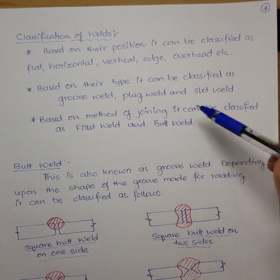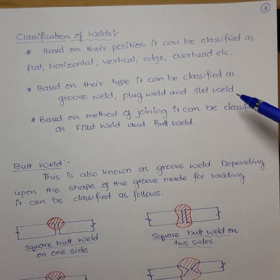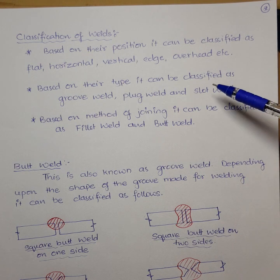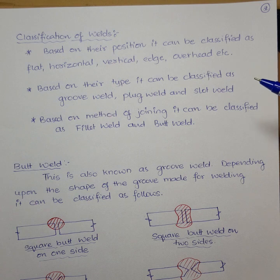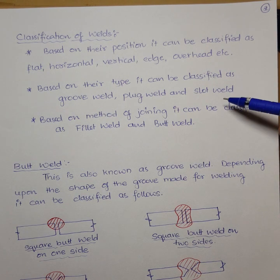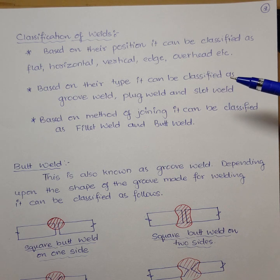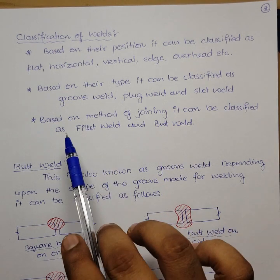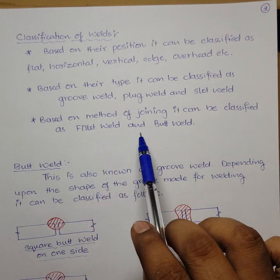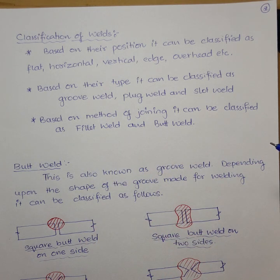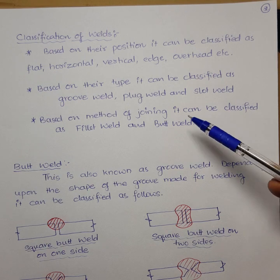The second classification is based on their type — whether it is a groove weld, plug weld, or slot weld. We will study these separately later. Mainly, based on the method of joining, welds can be classified as fillet weld and butt weld.